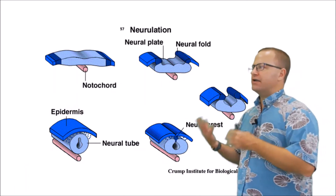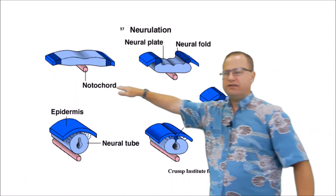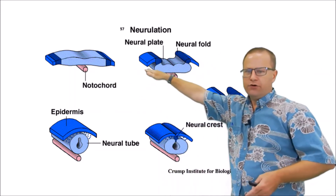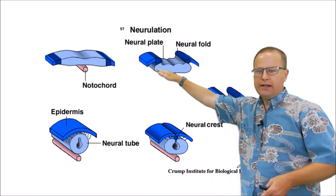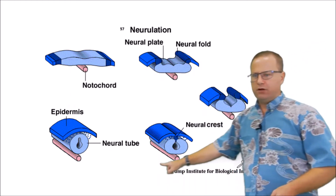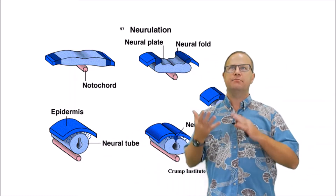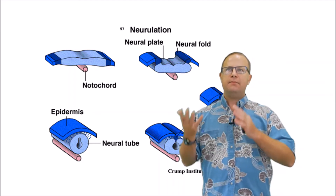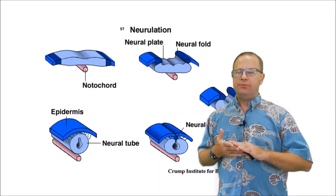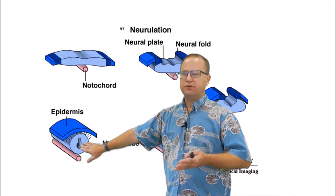We start out with a neural plate, and under signals from the notochord, that neural plate will become a neural fold, that neural fold will continue to fold up, and eventually it will form something called a neural tube. Now the neural tube is the basis for the CNS organs — the brain and the spinal cord. Think about those organs: they have hollow parts and also solid parts. In the brain the hollow parts were the ventricles, and in the spinal cord the hollow part was that central canal.